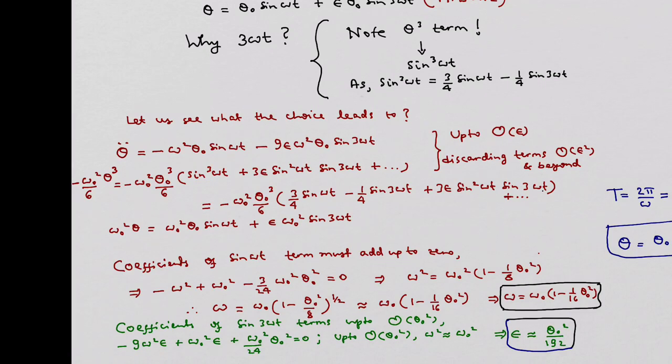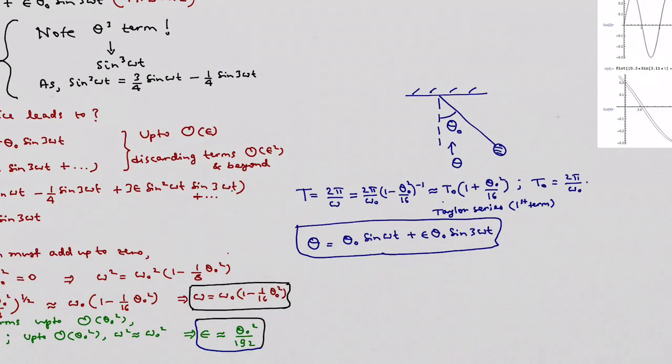Similarly if we collect coefficients of the term sin 3ωt up to order θ² we get the following expression. Now this in turn implies ε = θ₀²/192. Note that up to order θ₀², ω² equals ω₀². Thus we have obtained all the unknowns in the ansatz.